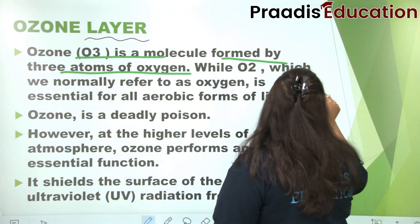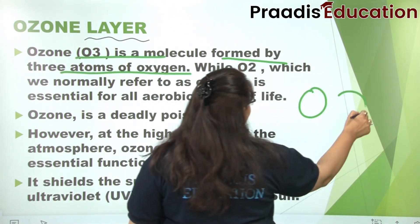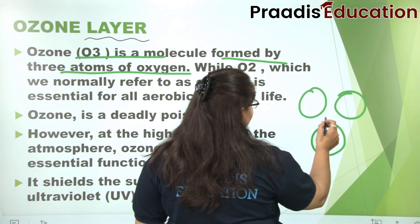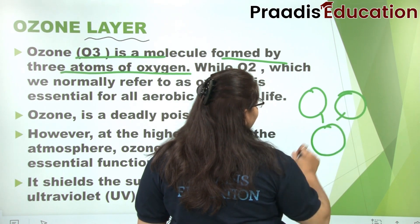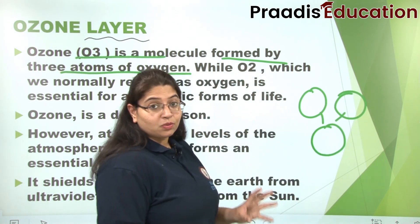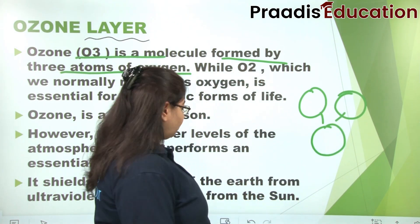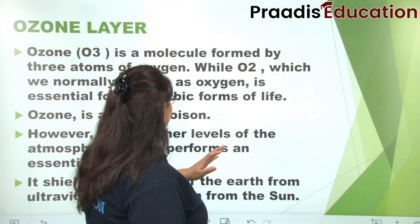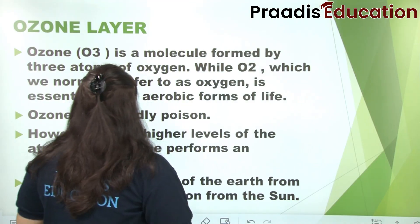Now we can see that there is one oxygen, two oxygen, three oxygen. When they form three atoms together, then the ozone formation is going to happen. This is the ozone formation.